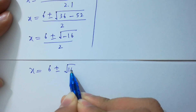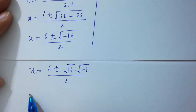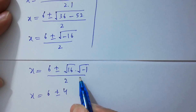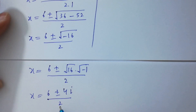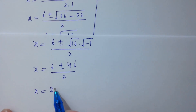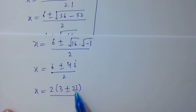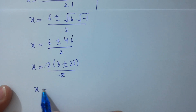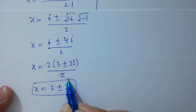This gives x equals 6 plus or minus square root of minus 16 over 2, which is 6 plus or minus 4i over 2. The 2 cancels, so x equals 3 plus or minus 2i. Thus x has two complex solutions.